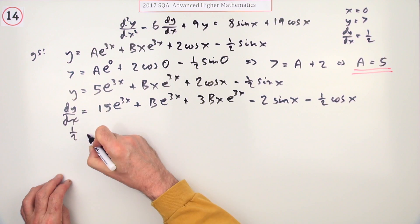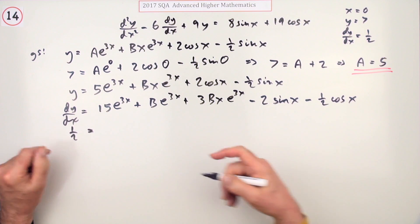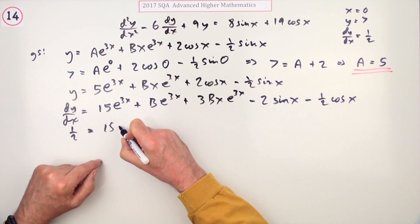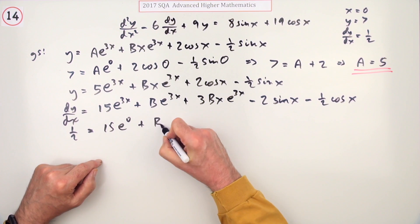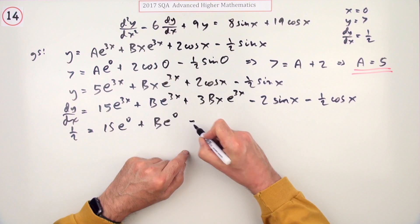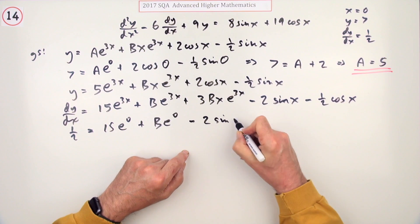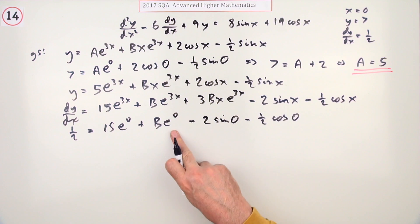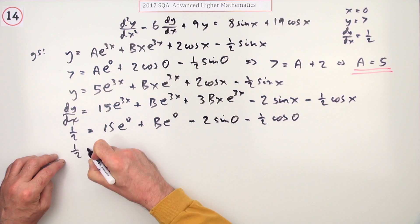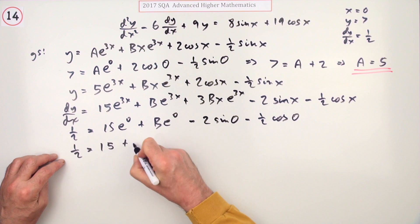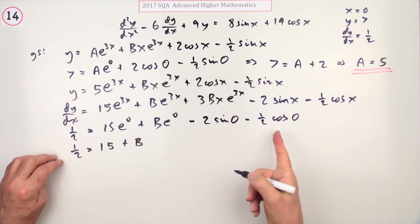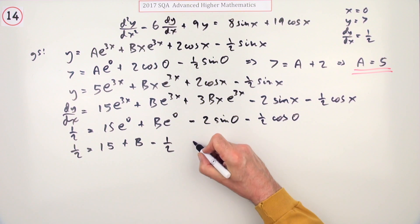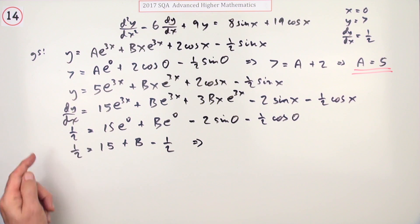Putting this in when x is zero, the derivative should be a half. So it's 15e to the zero plus Be to the zero, minus 2 sine zero minus a half cos zero. I've got a half equals 15 plus B minus a half. That half can join that half to make one, and then B will be one take away 15, which means B equals negative 14.